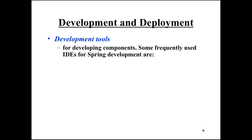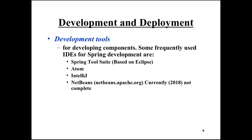We also need tools for development and for deployment. The development tool is typically an IDE. Commonly used IDEs for Spring development include Spring Tool Suite, which is based on Eclipse and is one of the Spring projects. Atom is frequently used because there's a Spring plugin available. IntelliJ is also frequently used for Java development. NetBeans used to be frequently used, but as of 2018 it is in transition from Oracle to Apache and is not fully usable, though it should be in good shape again with coming releases.